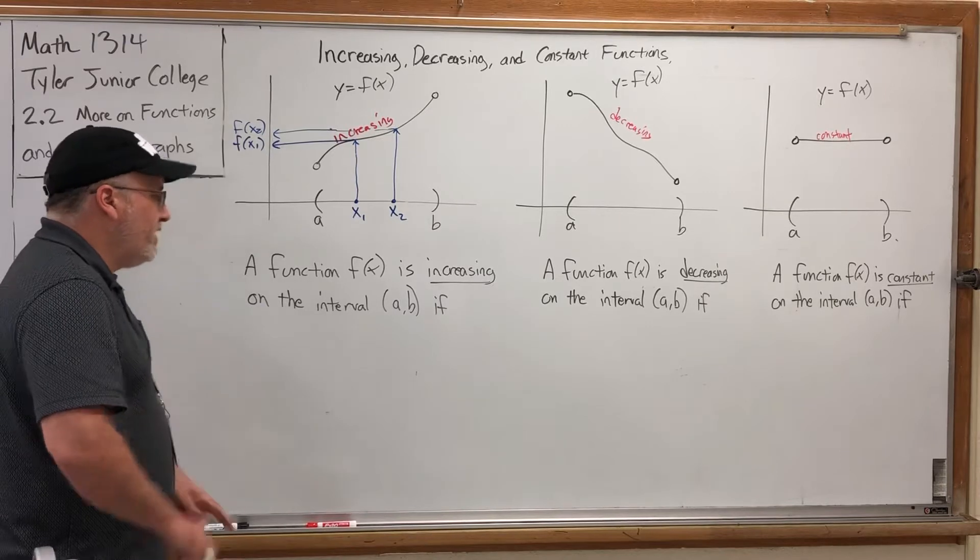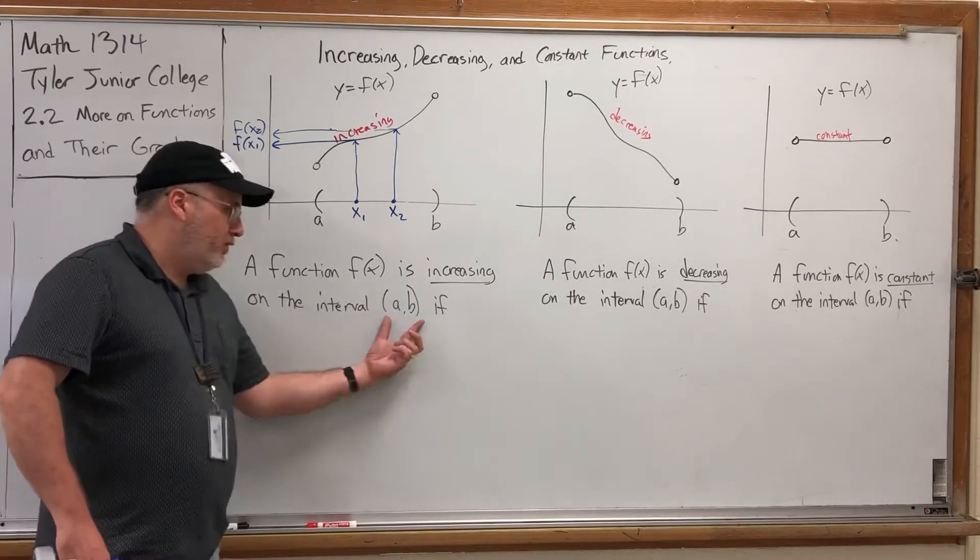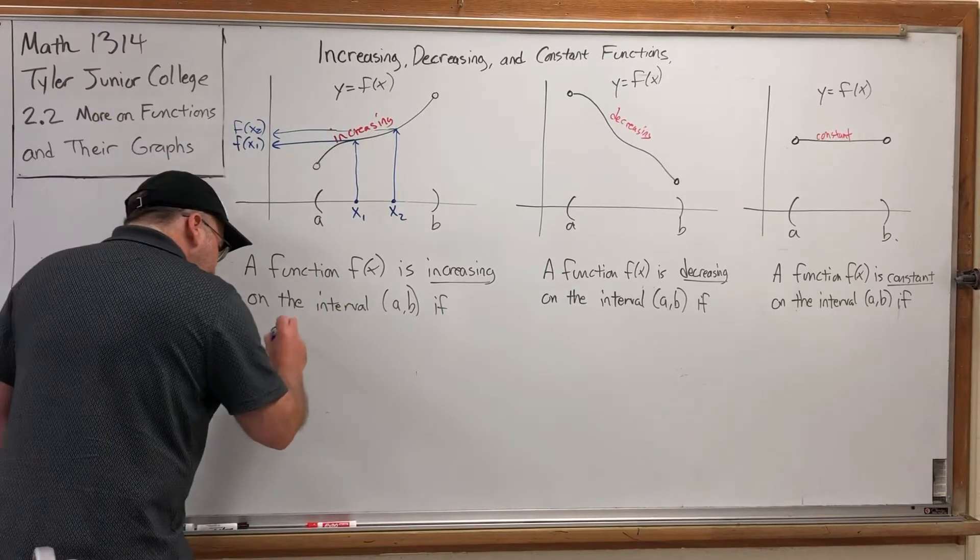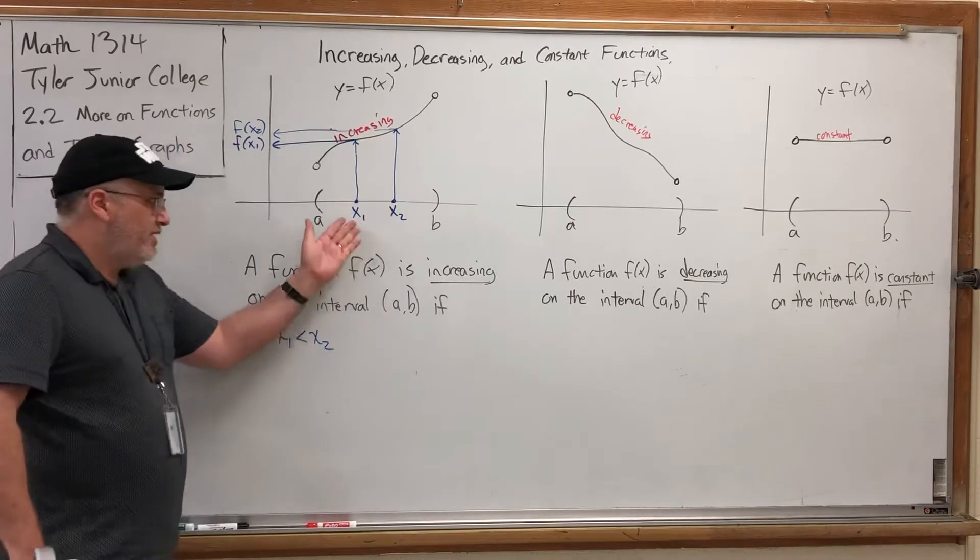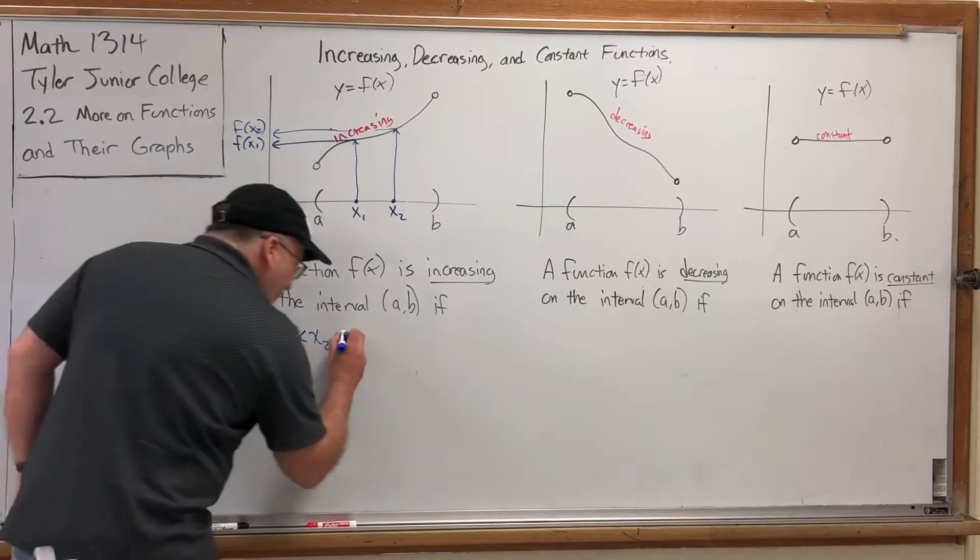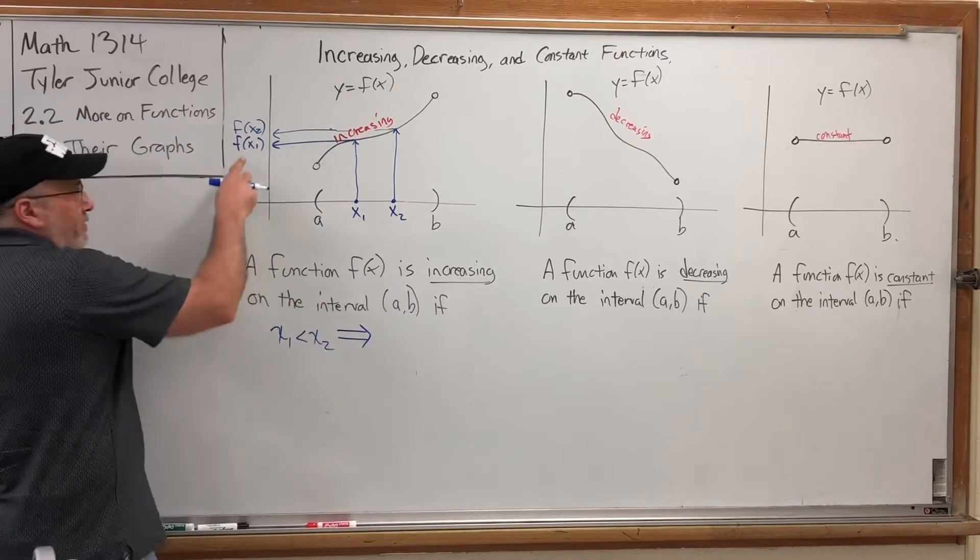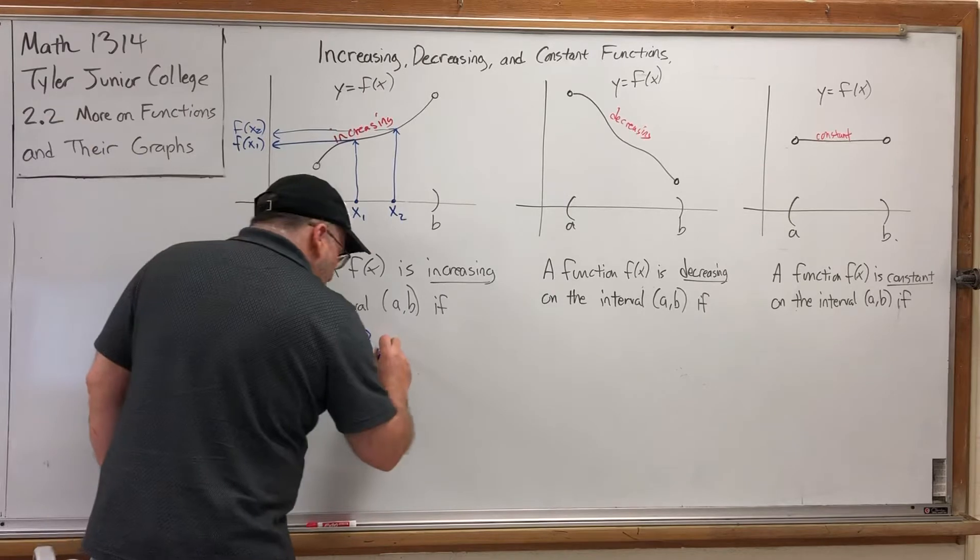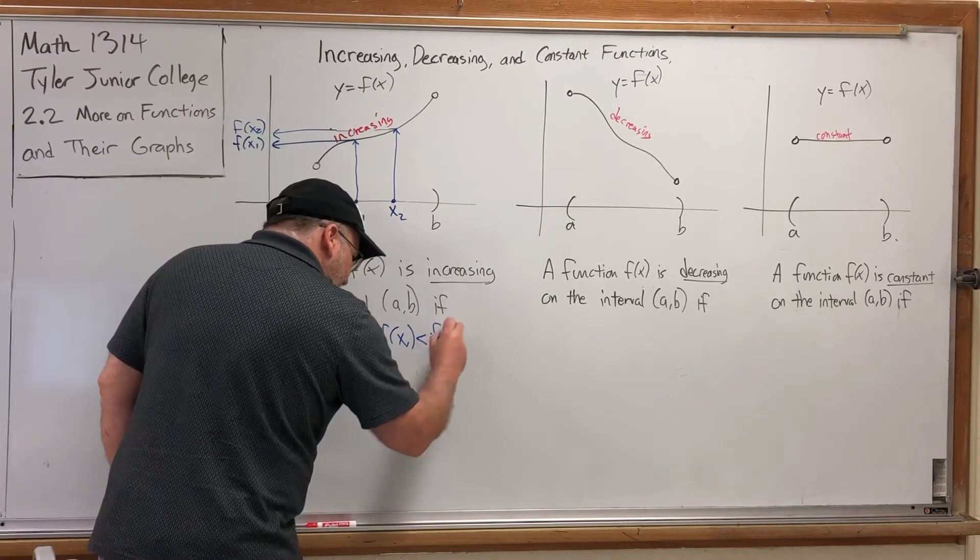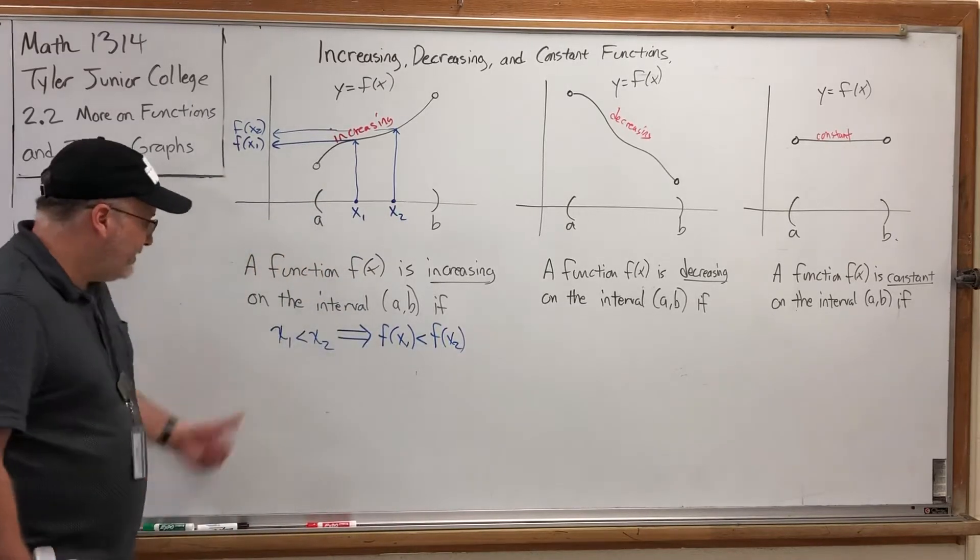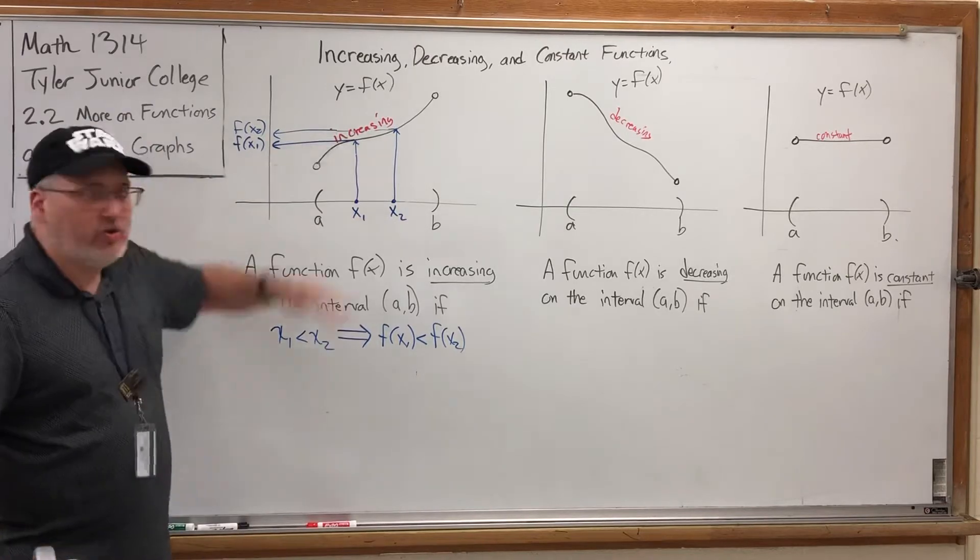If we go to the second x value and go up to the graph and then across to the y axis, it's fairly higher, but it is higher. So how can we define a function being increasing specifically in terms of its x and y values? We can say the following: a function f of x is increasing on the open interval (a, b) if x1 is less than x2 implies f of x1 is less than f of x2.